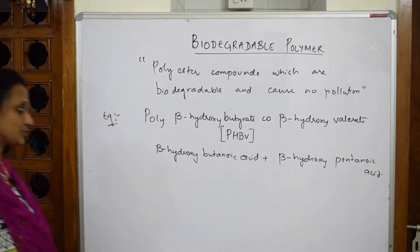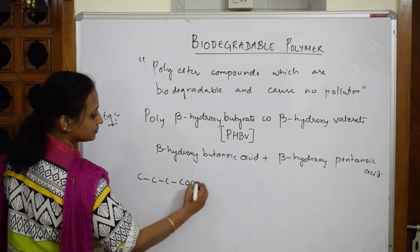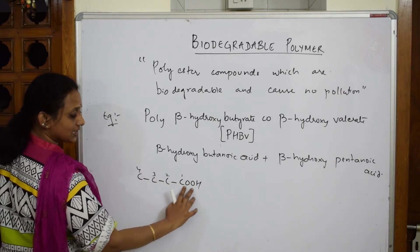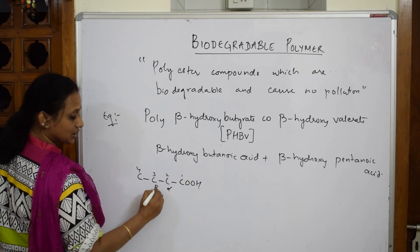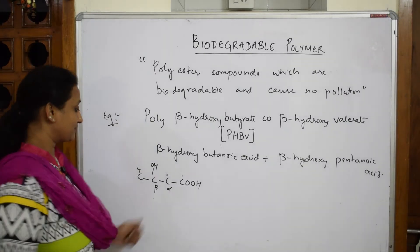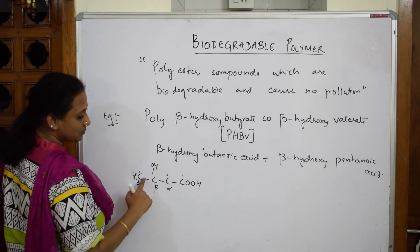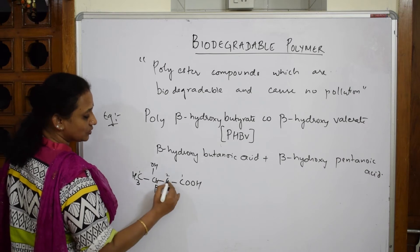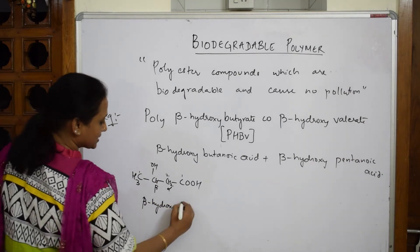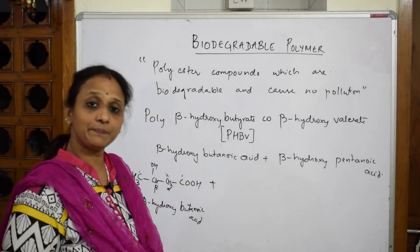Let's write the structures. For beta-hydroxy butyrate, first write butanoic acid with carbons one, two, three, four. Carbon one is the carboxylic acid (COOH), carbon two is the alpha carbon, and carbon three is the beta carbon, which carries the hydroxy group. Filling in the hydrogens: three hydrogens on carbon four, two on carbon three. This is called beta-hydroxy butanoic acid — four carbons.